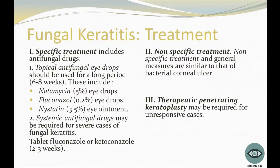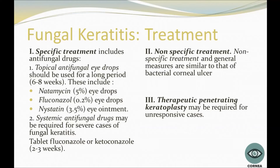For treatment, specific options include antifungal drugs with topical antifungal eye drops and systemic antifungal drugs, which can be used for six to eight weeks. These include natamycin, fluconazole, and nystatin. The doses are shown here. Systemic antifungal drugs may be required for severe cases. Tablet fluconazole and ketoconazole can be used for two to three weeks. Non-specific treatment can be similar to bacterial corneal ulcer management. Therapeutic penetrating keratoplasty may be required for unresponsive or complicated cases.